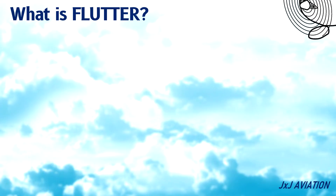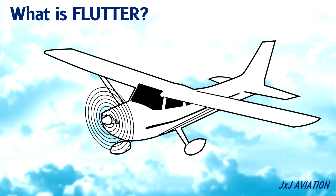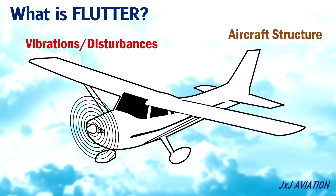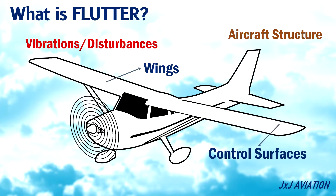What is flutter? Flutter refers to vibrations or disturbances that occur on an aircraft structure, such as the wings, control surfaces, or the stabilizers.